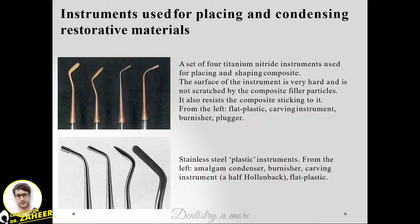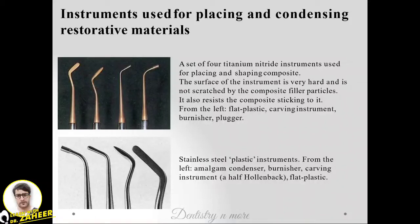A composite kit is a set of four titanium nitride instruments used for placing and shaping composite. The surface of these instruments is very hard and is not scratched by composite filler particles, and they resist composite sticking to them. The kit includes a flat plastic, carving instrument, burnisher, and plugger for composite. Stainless steel plastic instruments can be used while materials are in their plastic state — we can mold, burnish, and carve them; once set, they become a hard restoration.